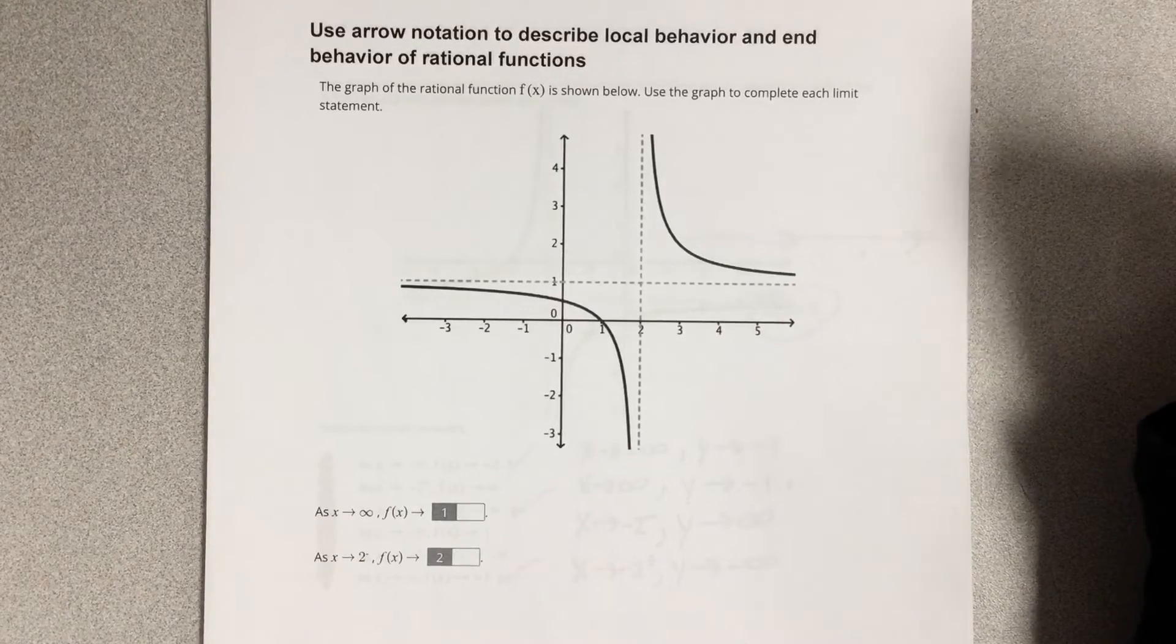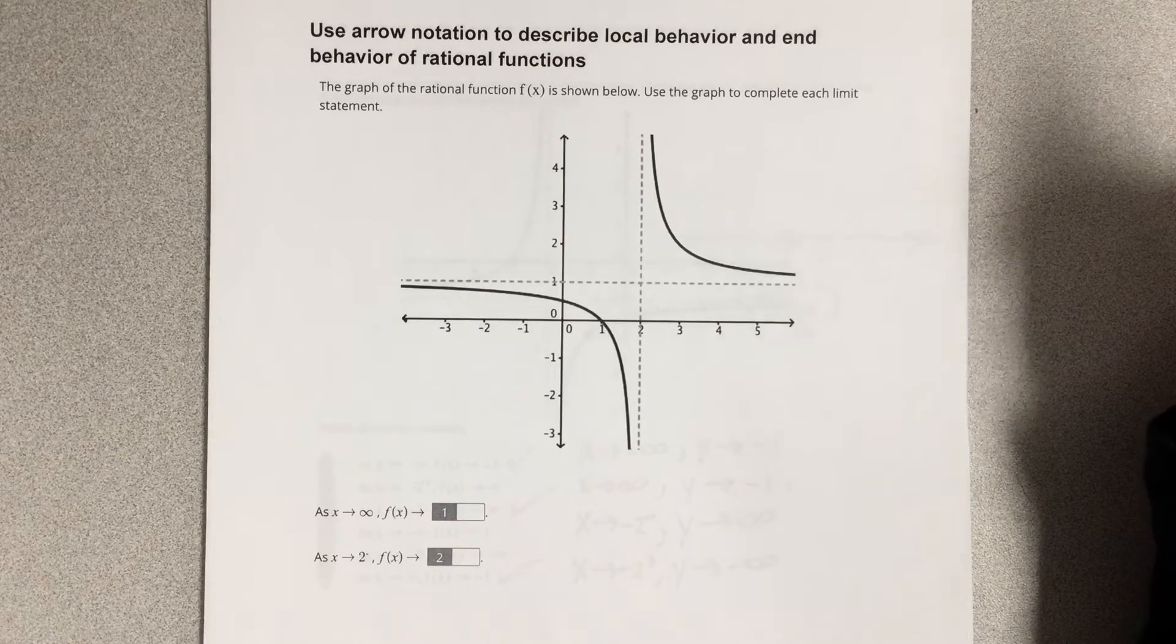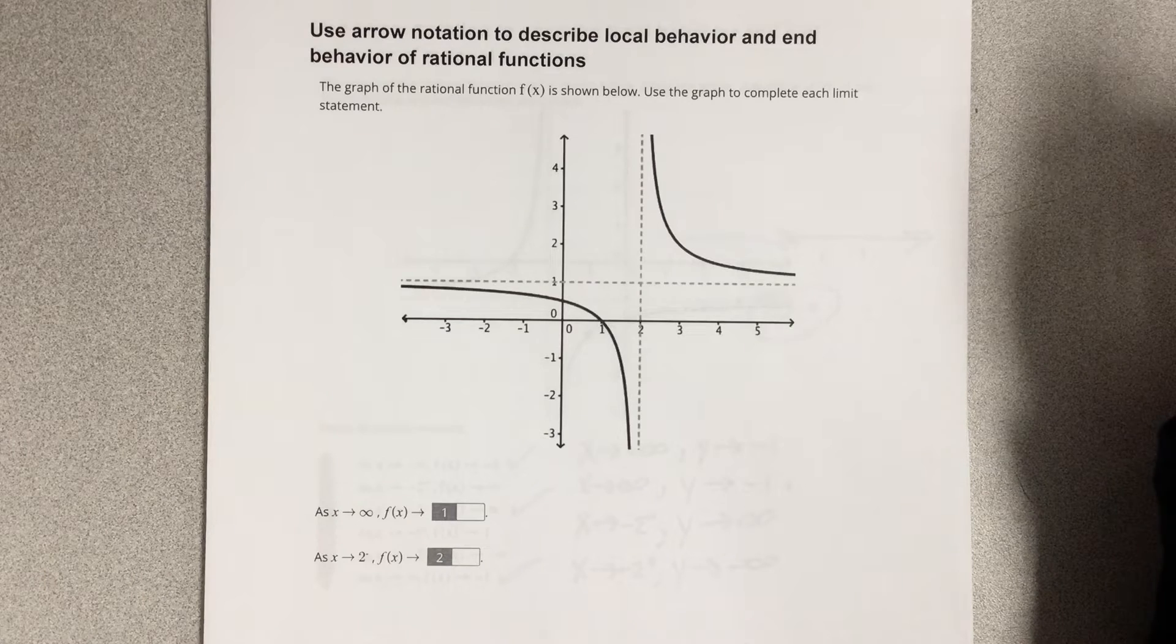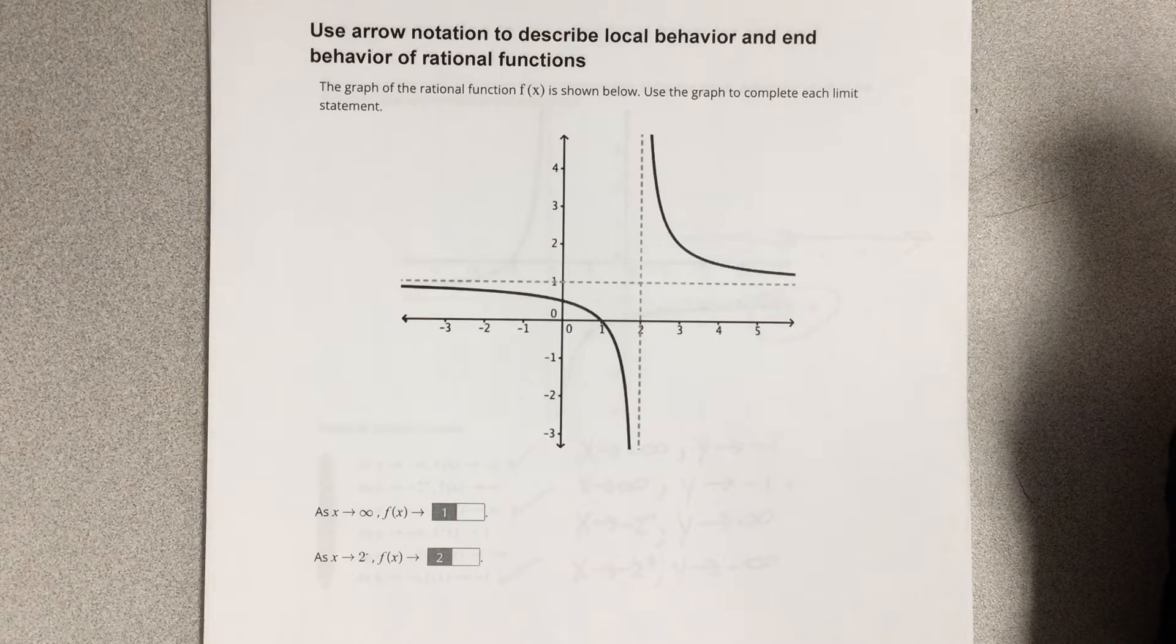In this video, we're going to use arrow notation to describe local behavior and end behavior of rational functions. The graph of the rational function f of x is shown below. Use the graph to complete each limit statement.